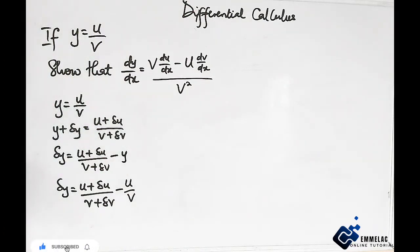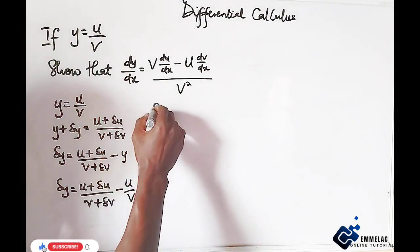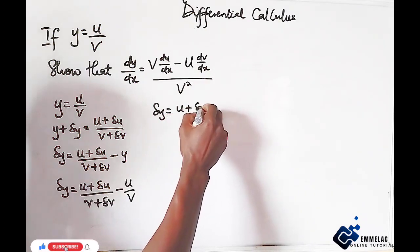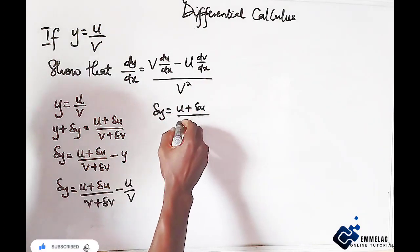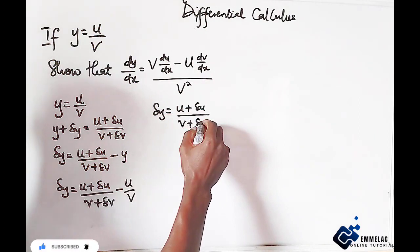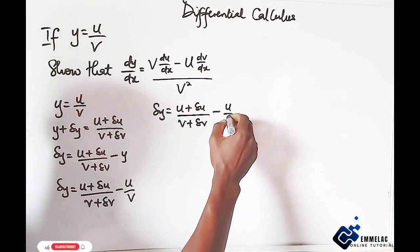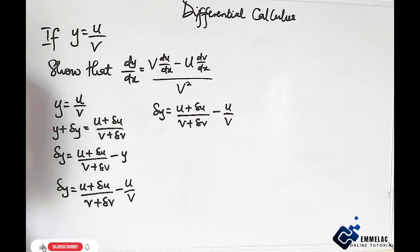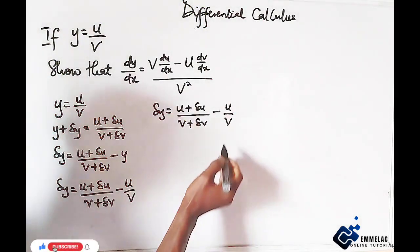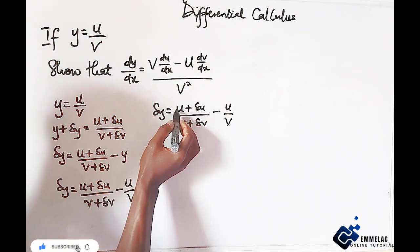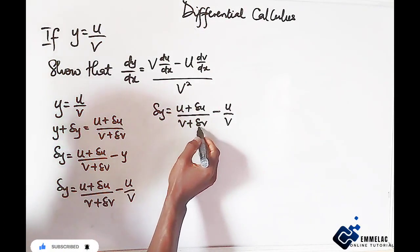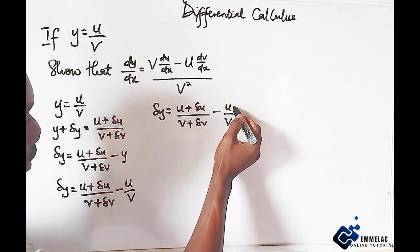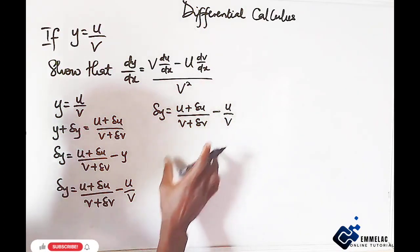At this point, let us have a common fraction. By doing that, we can just collect LCM. So change in y equals u plus change in u all over v plus change in v minus u all over v. Let us just do the butterfly method: v multiplied through by the numerator here and v plus dv multiplied through by the numerator here, and the denominators multiply each other.